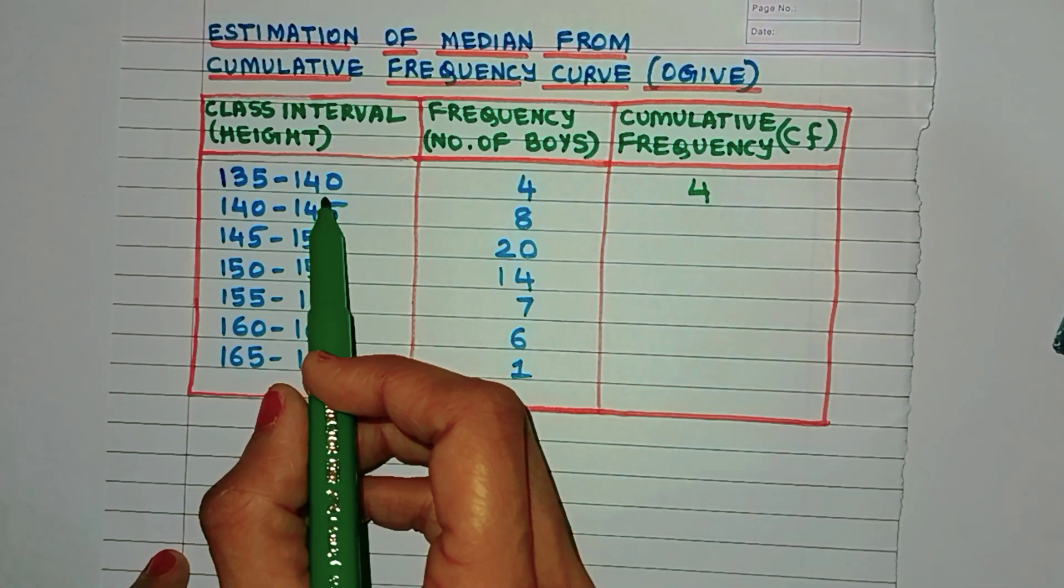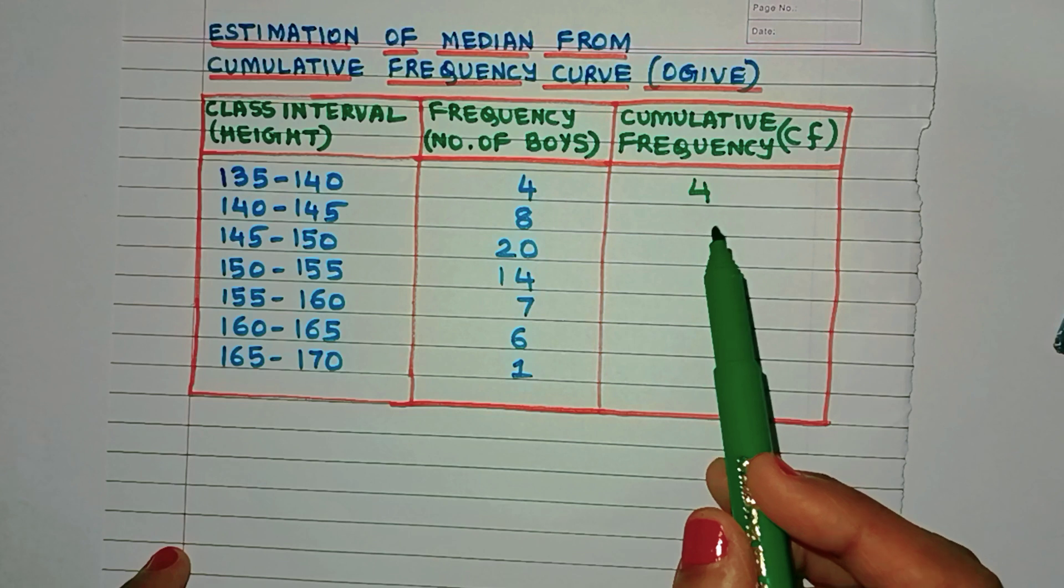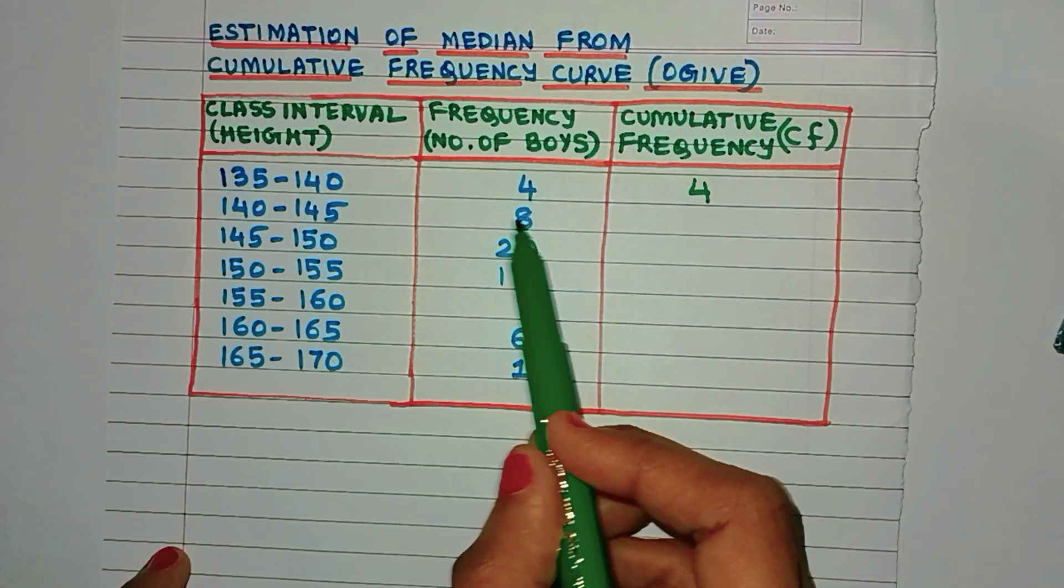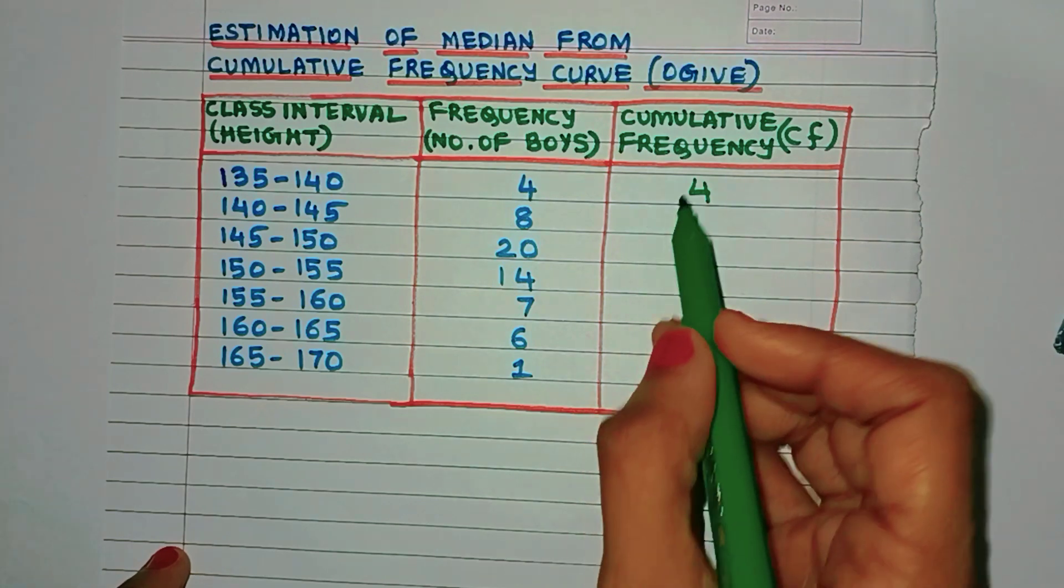So that's why 4 is the CF of the first class interval. Now for the remaining class intervals, to get the CF, simply add the frequency of that class interval with the CF of the previous class interval.